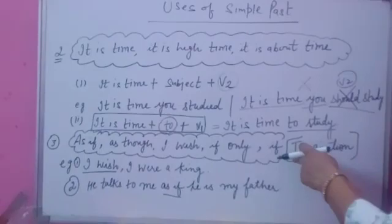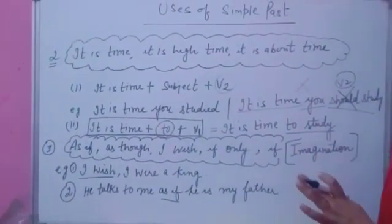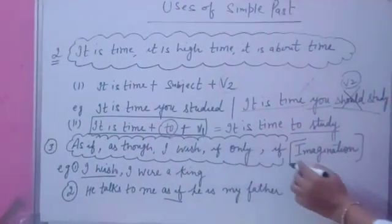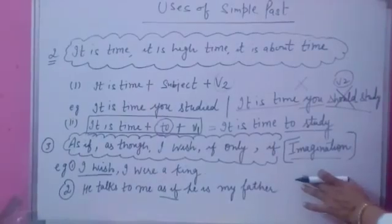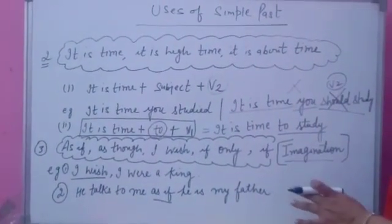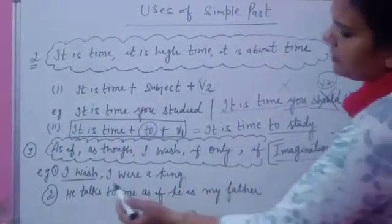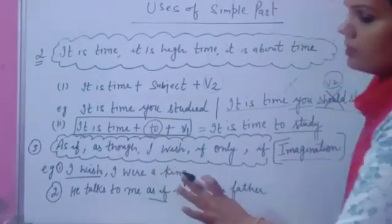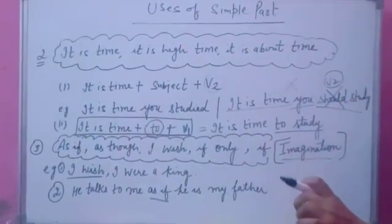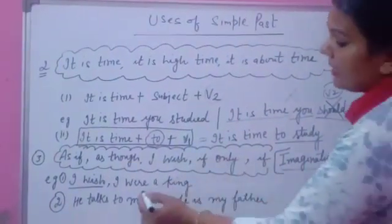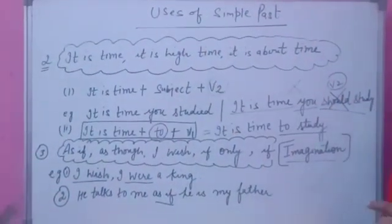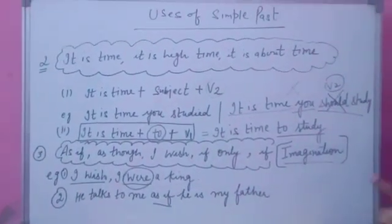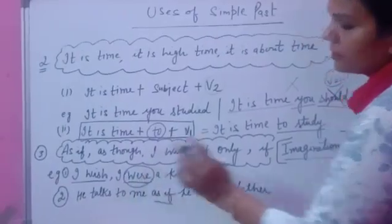The third use is wherever you find these expressions. It may be in one sentence. All these expressions are related to imagination. They always show imagination that is not real, only in your imagination. For example, I wish I were a king. You are not a king in reality but you are wishing for that. In that case, you always use past indefinite tense. At the place of was, you always use were. Not was will be there. Only were will be used here.